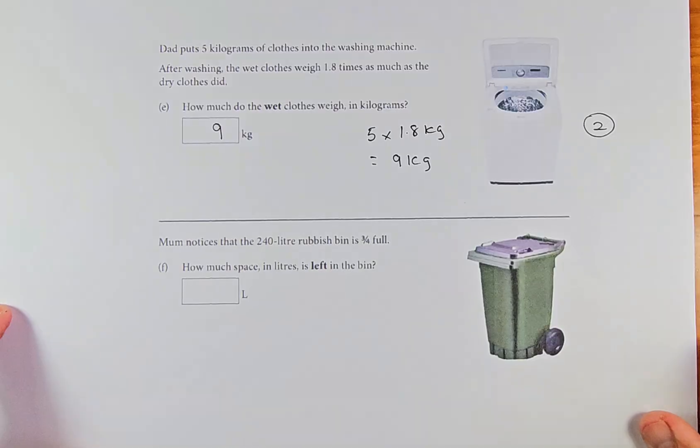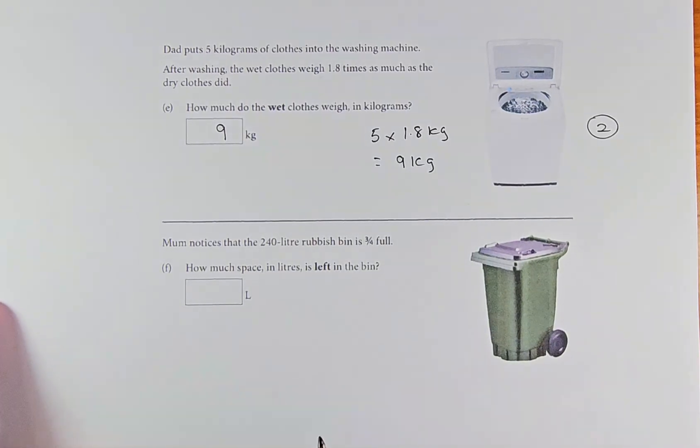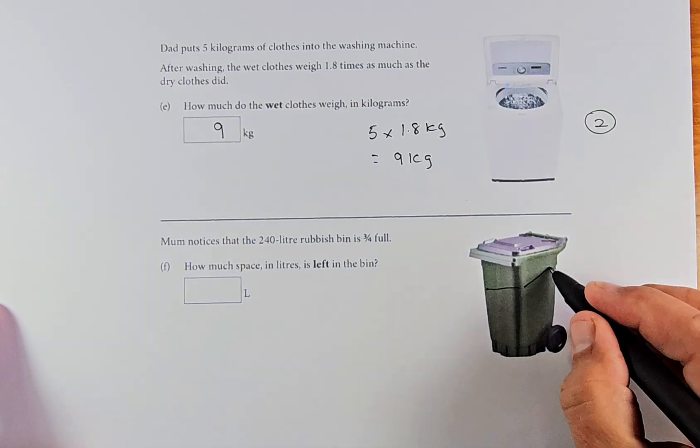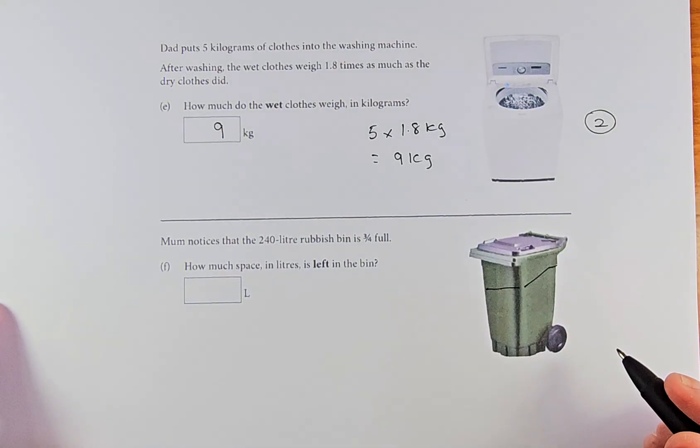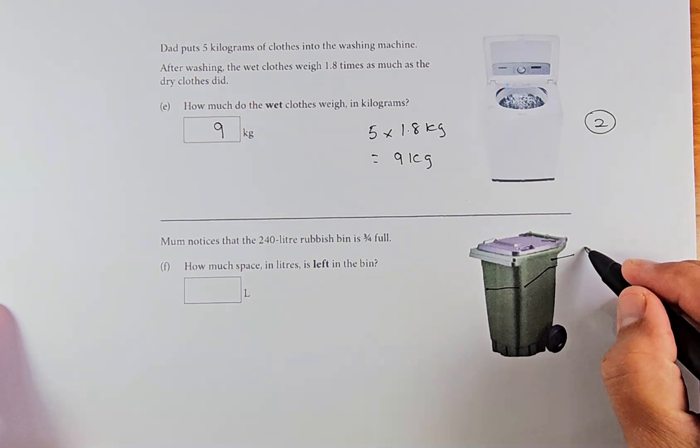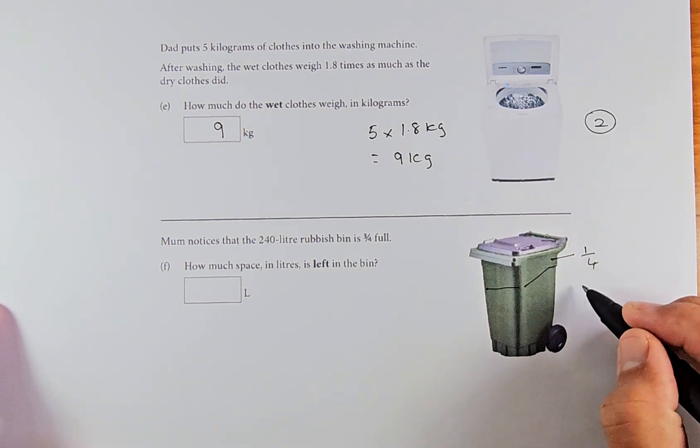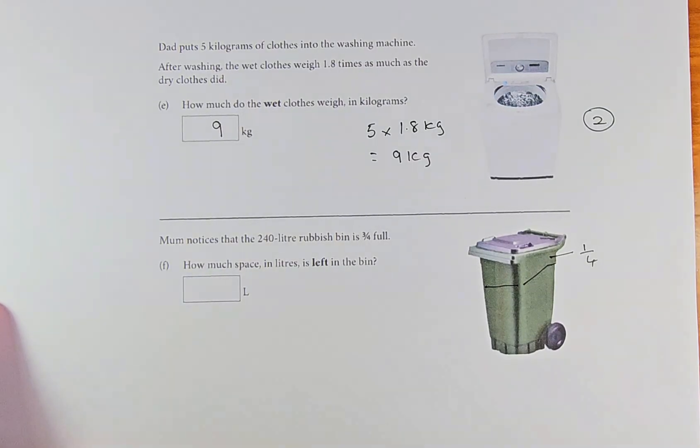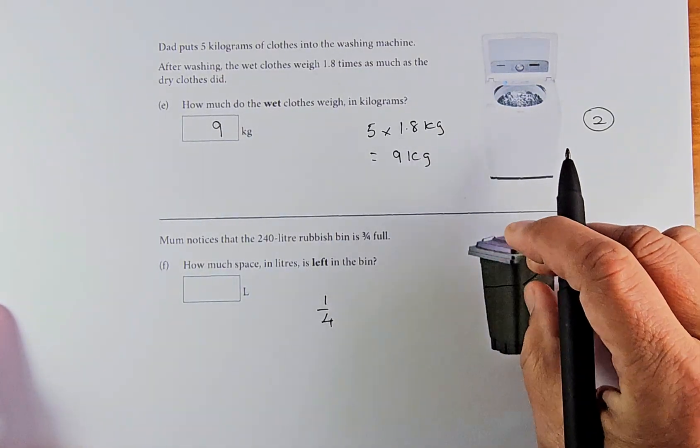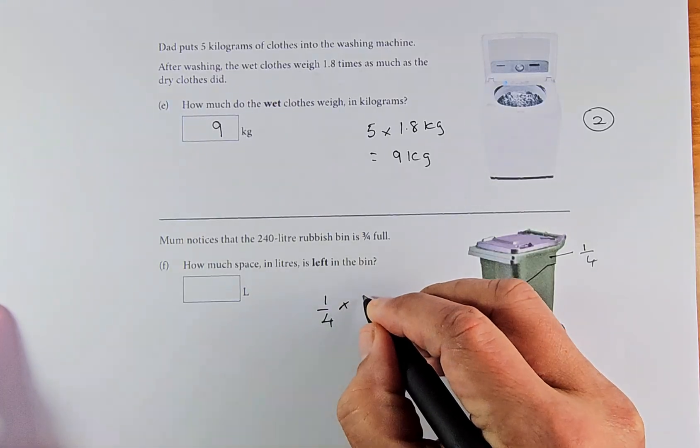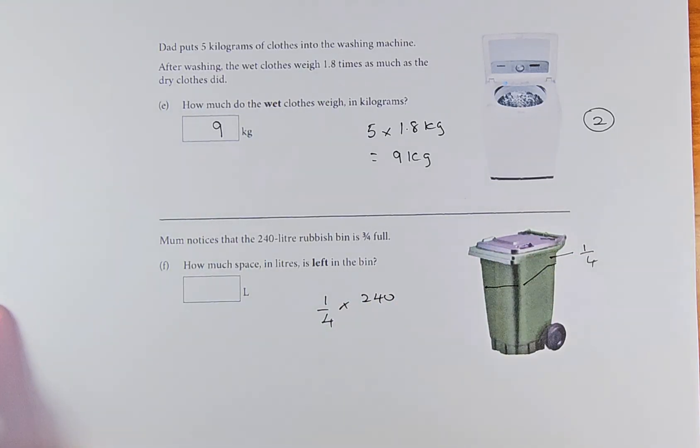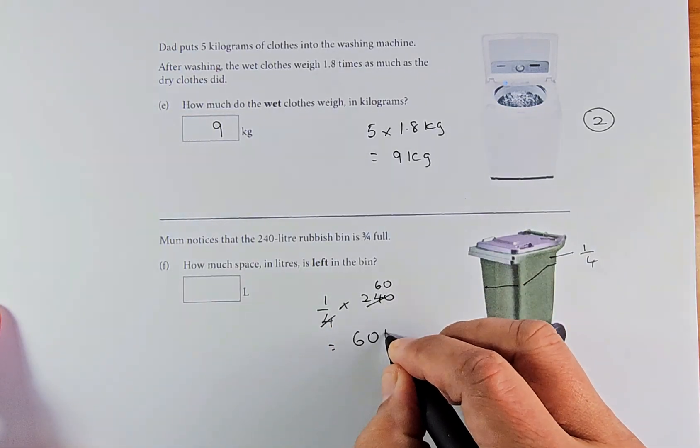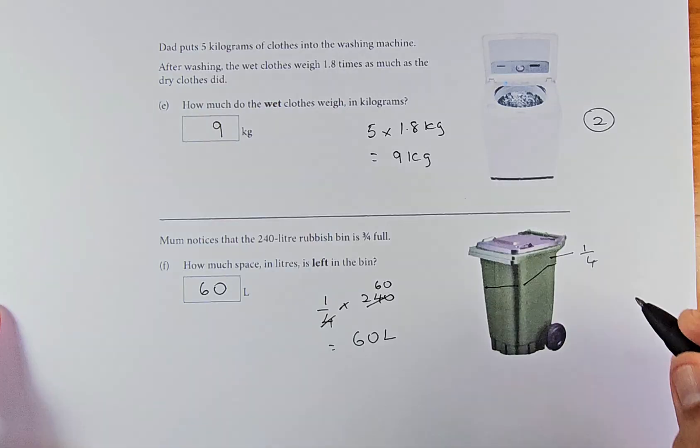Last but not least, question 1f. Mom noticed that 240 liters rubbish bin is 3 quarter full. How much space is left in the bin? This is 1 quarter because 3 quarter is filled. So we're going to take 1 quarter multiplied by 240 because the whole bin can take 240. Put in your calculator or you can cancel them out. It's going to be 60 liters. Again, that is outcome number two.